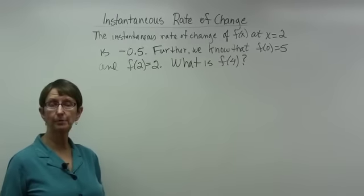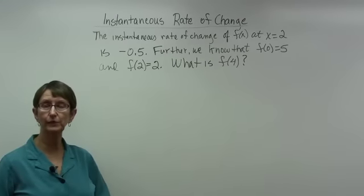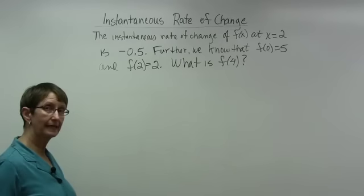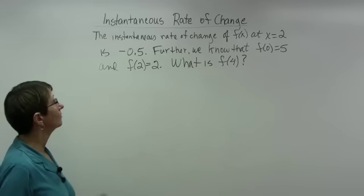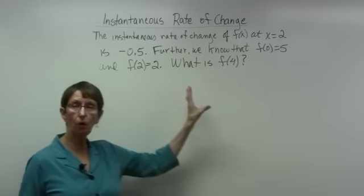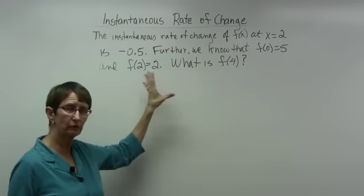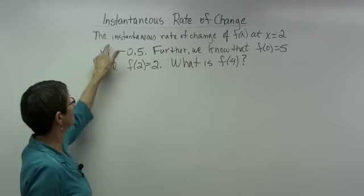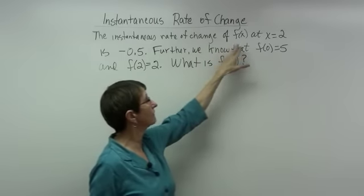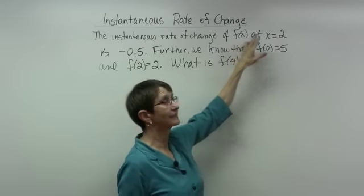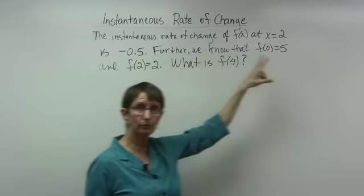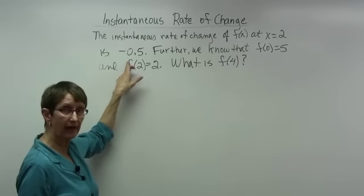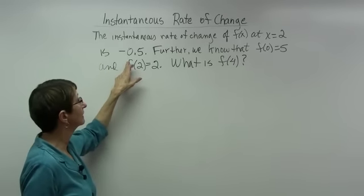Let's look at another example of instantaneous rate of change. In this case we're not given a data table, but we probably want to set one up because there's a lot of information. The instantaneous rate of change of f of x at x equal to 2 is negative 0.5.